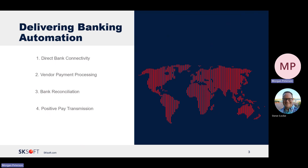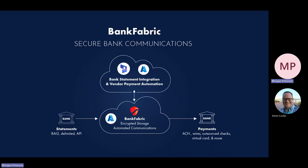And then Steve will show positive pay transmission and how we can easily reduce the manual process around that. First, for direct banking connectivity, we always start with this in our demos because this is a critical portion of our solution — integrating to banks. And we do that through a solution called Bank Fabric.